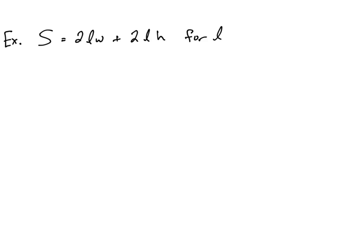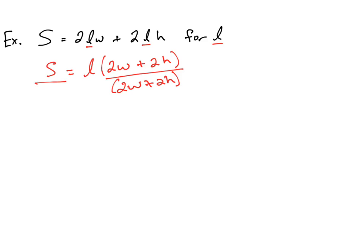In the next example we're solving for l, and l appears in two separate terms. When the variable appears in multiple terms, we want to factor it out. Factoring l from both terms gives l times (2w plus 2h). Dividing both sides by (2w plus 2h) isolates l, so s over (2w plus 2h) equals l.